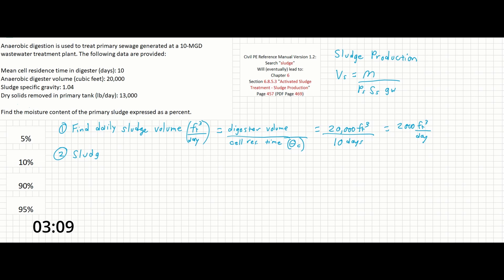V_S we said is 2,000 cubic feet per day, and that equals M, which is the dry solids removed in the primary tank of 13,000 pounds per day. This is going to be over P_S. S_S is our specific gravity weight of 1.04. And finally, the unit weight of water is going to be 62.4 pounds per cubic feet.